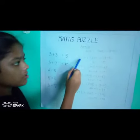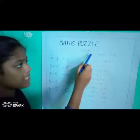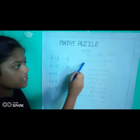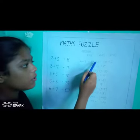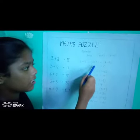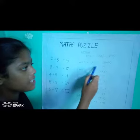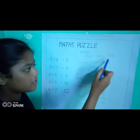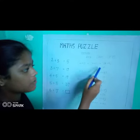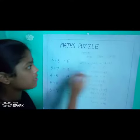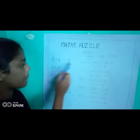A value is 2 and B value is 3. 2 into 3 equal to 6, minus 3, minus 2, equal to 1. 6 minus 1 equal to 5. So the answer is 5.